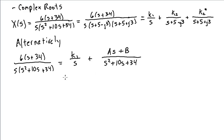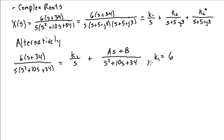I can find K1 using the cover-up method. I just cover up the S term, evaluate at S equal to zero, and get 6 times 34 in the numerator. The denominator, after covering up the S term, reduces to 34, so K1 becomes equal to 6.